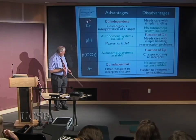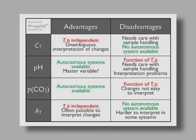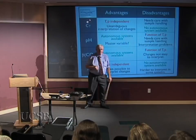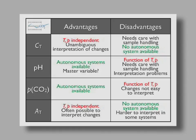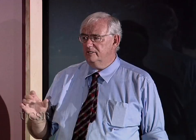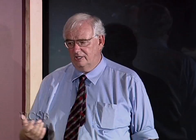Alkalinity is temperature and pressure independent, like total carbon. Changes in alkalinity can often be interpreted — if the alkalinity goes down in a calcifying system, the change may tell you something about the extent of calcification, provided it's in a closed system. It's awkward to measure autonomously, and if there are other acid-base systems present that you don't explicitly acknowledge, you can't interpret exactly what the alkalinity means.